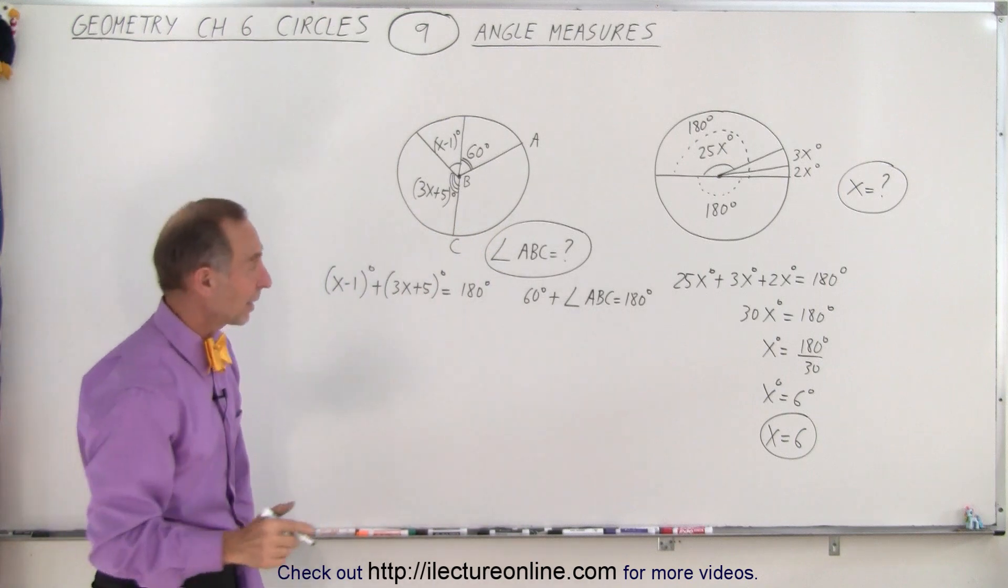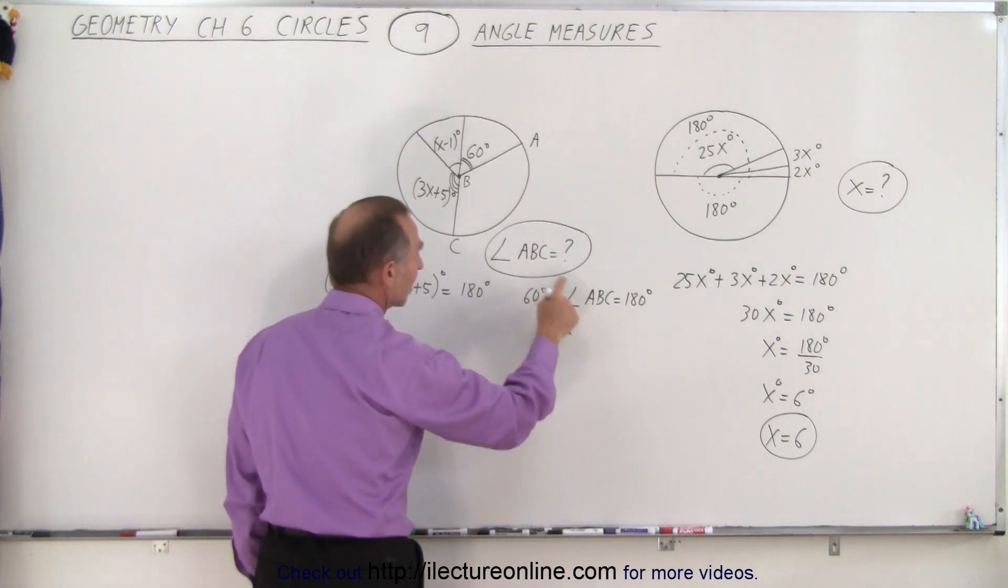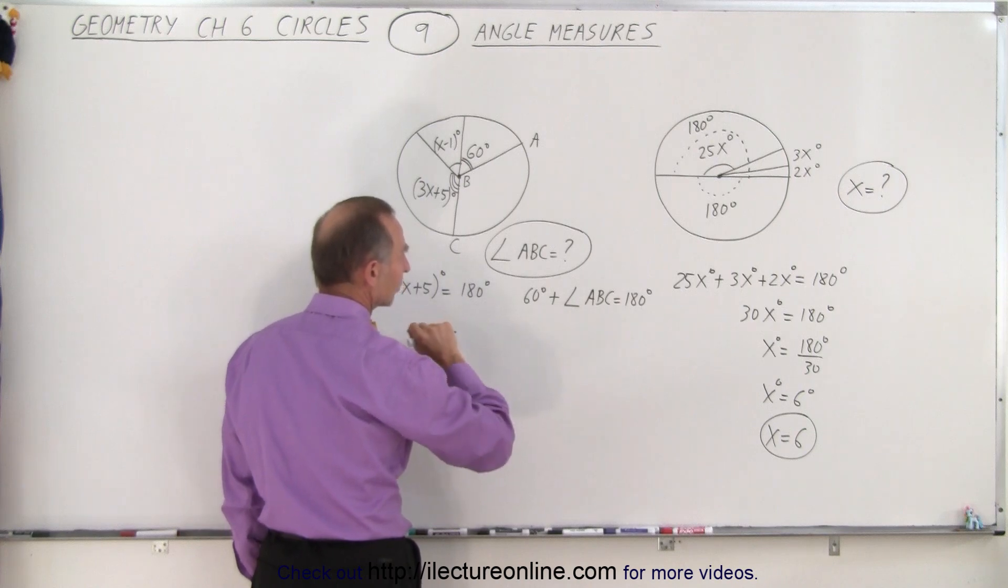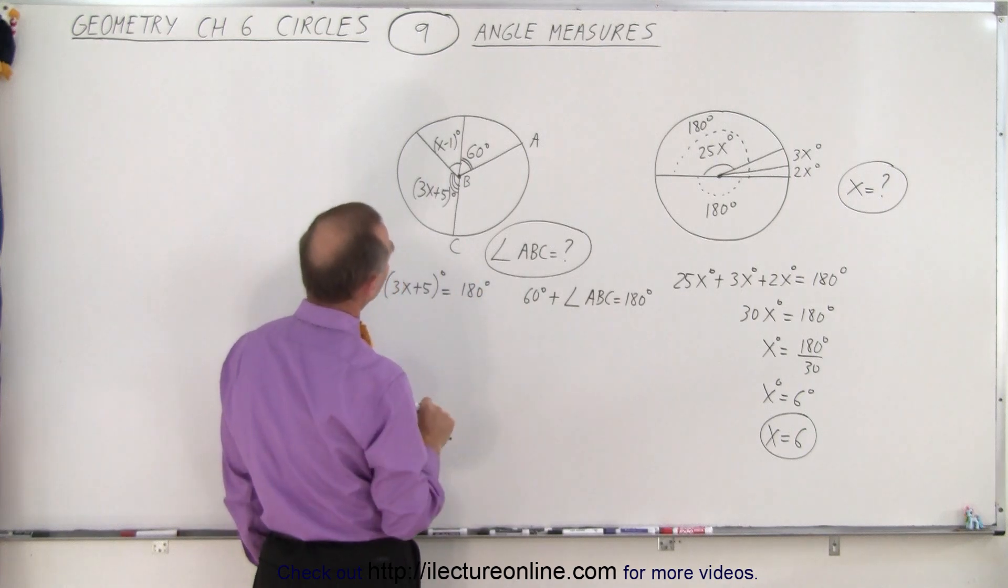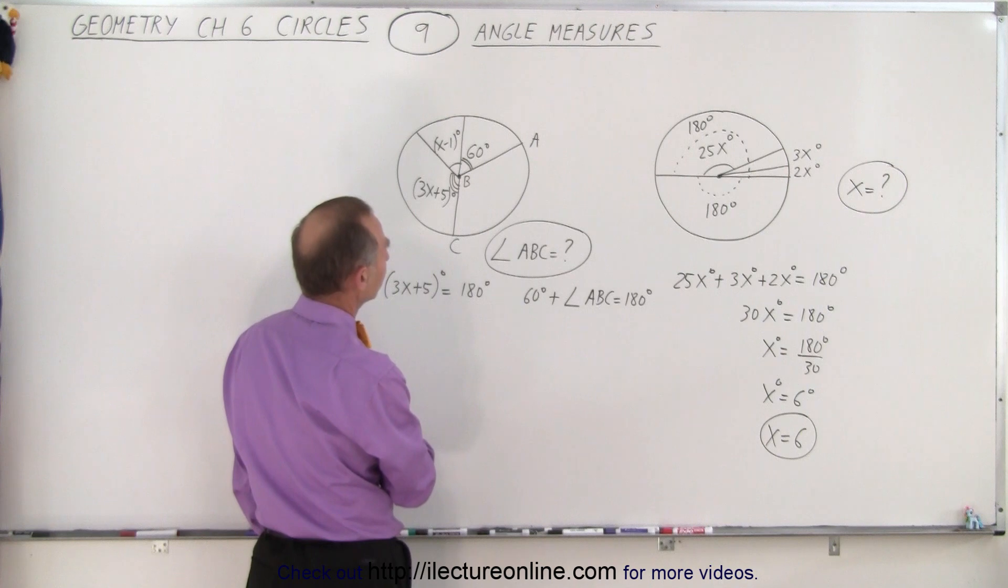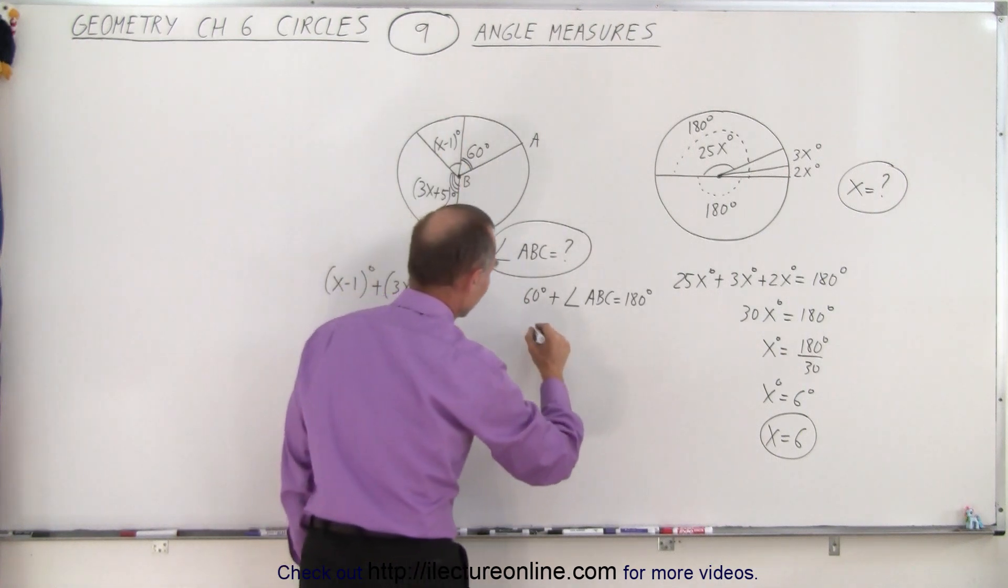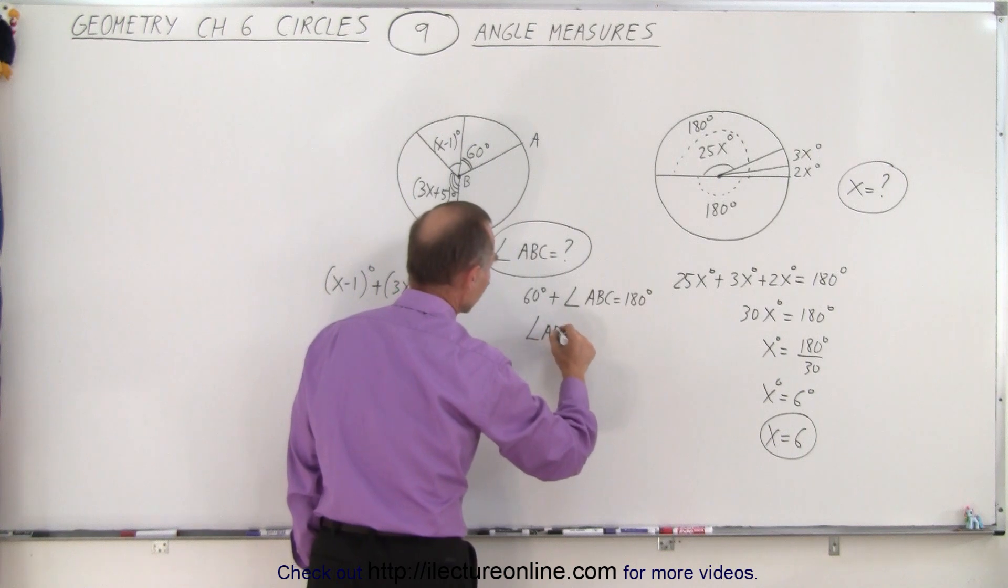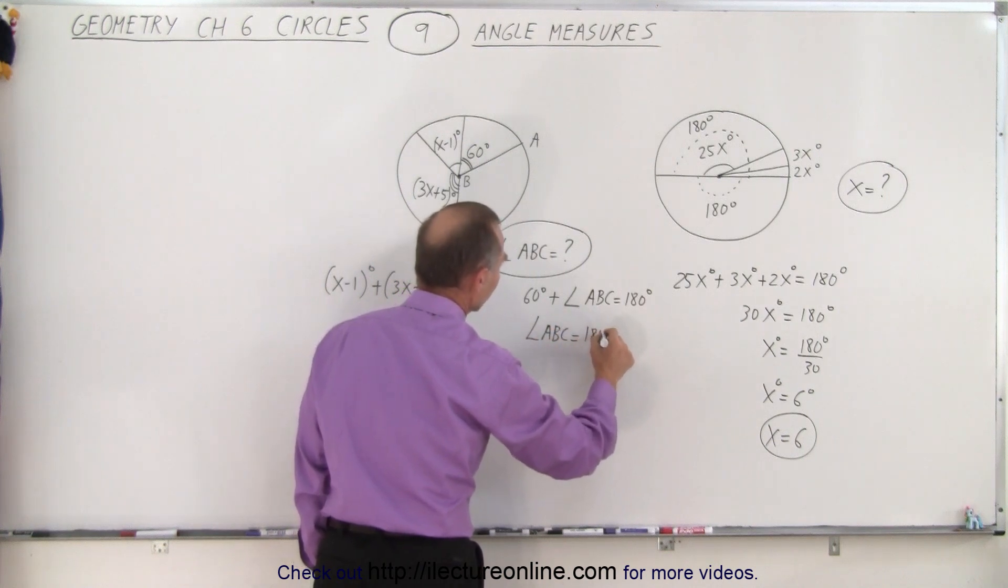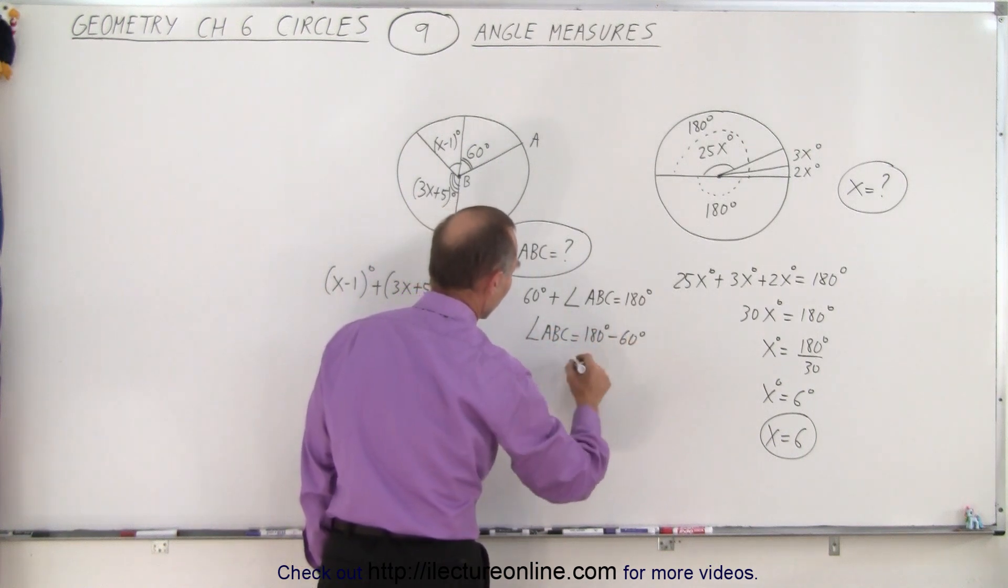So in this case we're trying to find the value for the angle ABC, and that makes it easy because that's the right half, so we can simply say the angle ABC is equal to 180 degrees minus 60 degrees, which is equal to 120 degrees, and we're done.